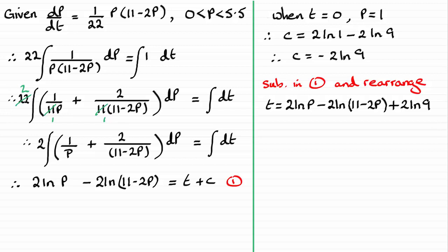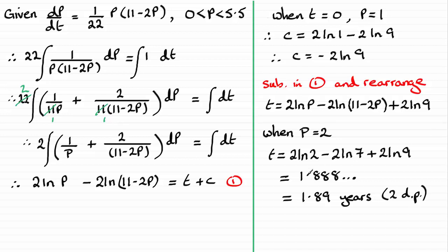Substitute that into our equation when p equals 2, and you're going to get this result for t. Now, if you get on your calculator, work this out, you'll find that you get 1.888 and so on. And if we round this to two decimal places, it's going to be 1.89. The units will be years for that time. So that's how long it takes for that population of meerkats to double.